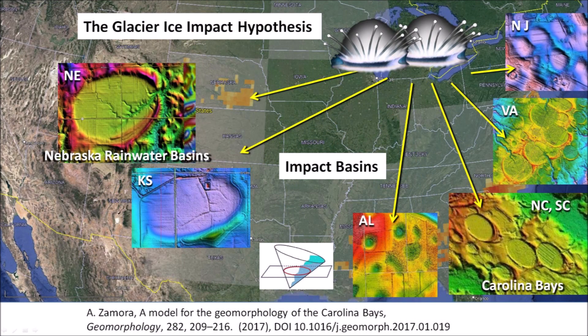As I have mentioned in previous presentations, the Glacier Ice Impact Hypothesis proposes that one or more extraterrestrial impacts on the Laurentide Ice Sheet by the Great Lakes ejected pieces of ice in ballistic trajectories. The secondary impacts produced seismic vibrations that liquefied unconsolidated soil, and the oblique impacts of glacier ice created inclined conical cavities that became shallow elliptical basins by viscous relaxation. Most of the bays that I have studied converge by Lake Michigan or Saginaw Bay — this is the first time that I see several trajectories converging at Lake Superior.